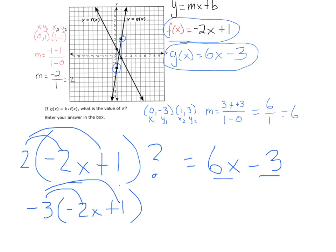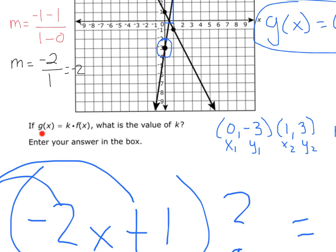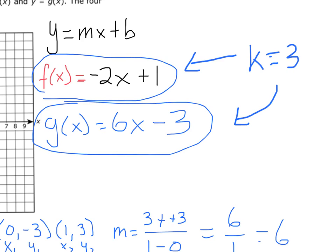What if I did -3 times -2x + 1, and I distribute it? So -3 times -2x is positive 6x, and -3 times positive 1 is -3. So there's my answer. If I multiply f of x, if I multiply this function times 3, so if my k equals 3, if I multiply it by 3, I end up with this function right here. And so, if you look at the question, it says, if g of x is k times f of x, then what's k? Well, we figured out what k is. k equals 3.